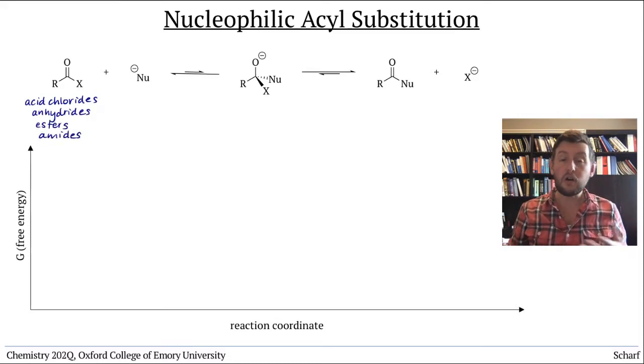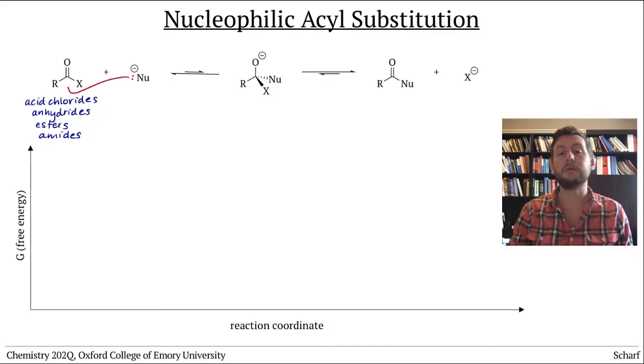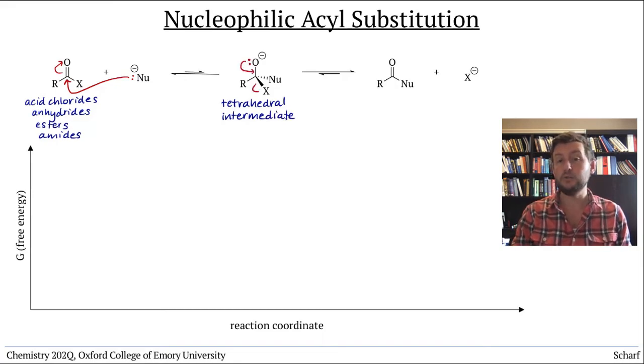These compounds all behave as electrophiles. That is, nucleophiles attack their π star CO orbitals to create tetrahedral intermediates, which tend to collapse by a lone pair push to kick out the best leaving group.